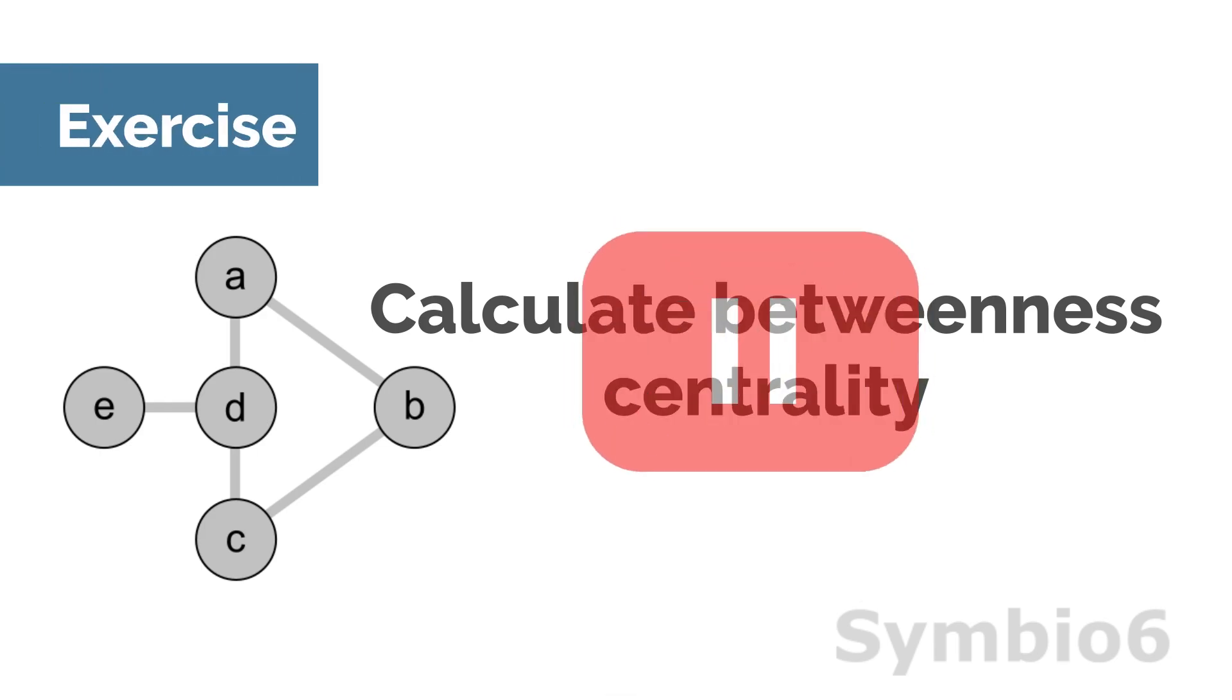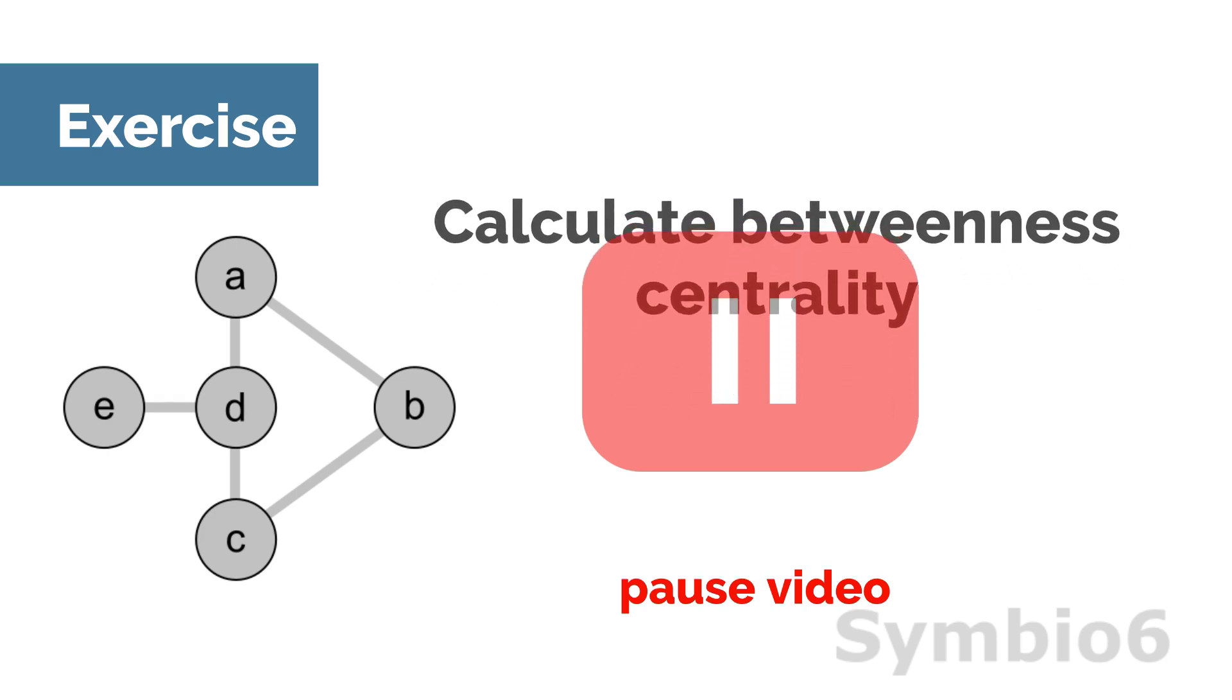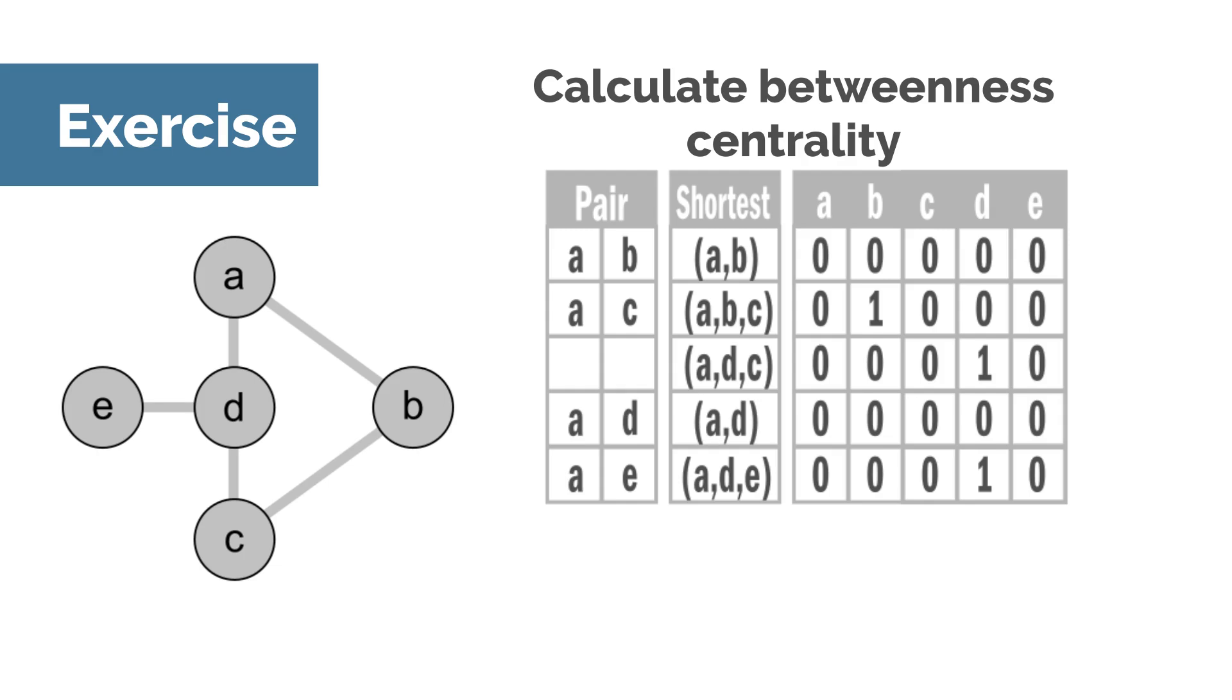An exercise. Pause the video and calculate the betweenness centrality of this undirected network. First, it is noticeable that you can skip all paths between two neighbor nodes, because they have no intermediate node.